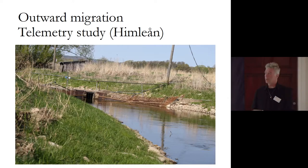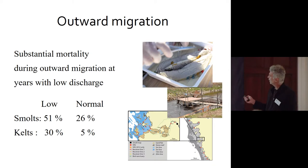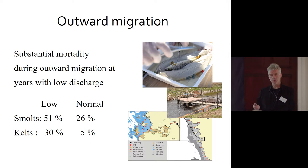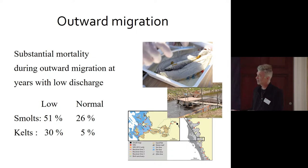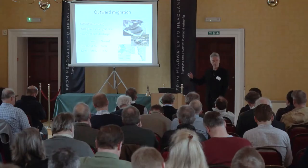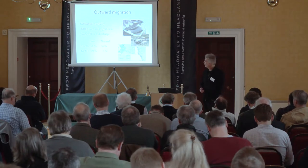We continued to follow fish on their outward migration using acoustic transmitters. There was a huge difference in discharge between the two years, which was reflected in mortality rates. In the year with low discharge, mortality rates for smolts were 51% and for kelts 30%. In the year with normal discharge, mortality dropped to 26% for smolts and just 5% for kelts — twice as much mortality with a low discharge event. This is something we need to bear in mind when modelling mortality rates, as they can vary to a large extent.